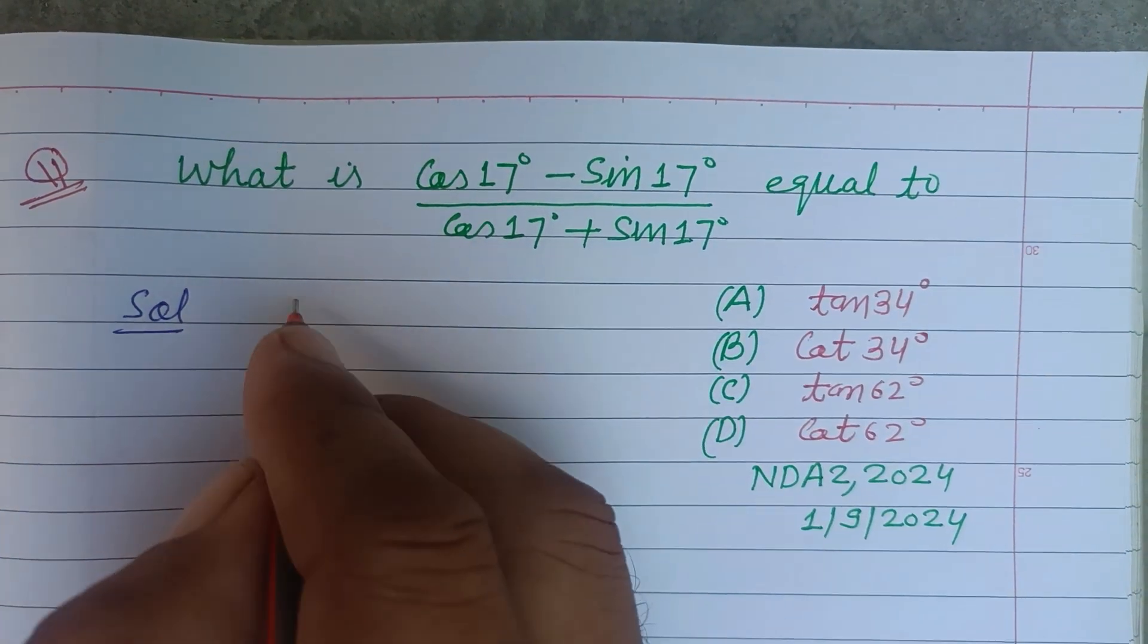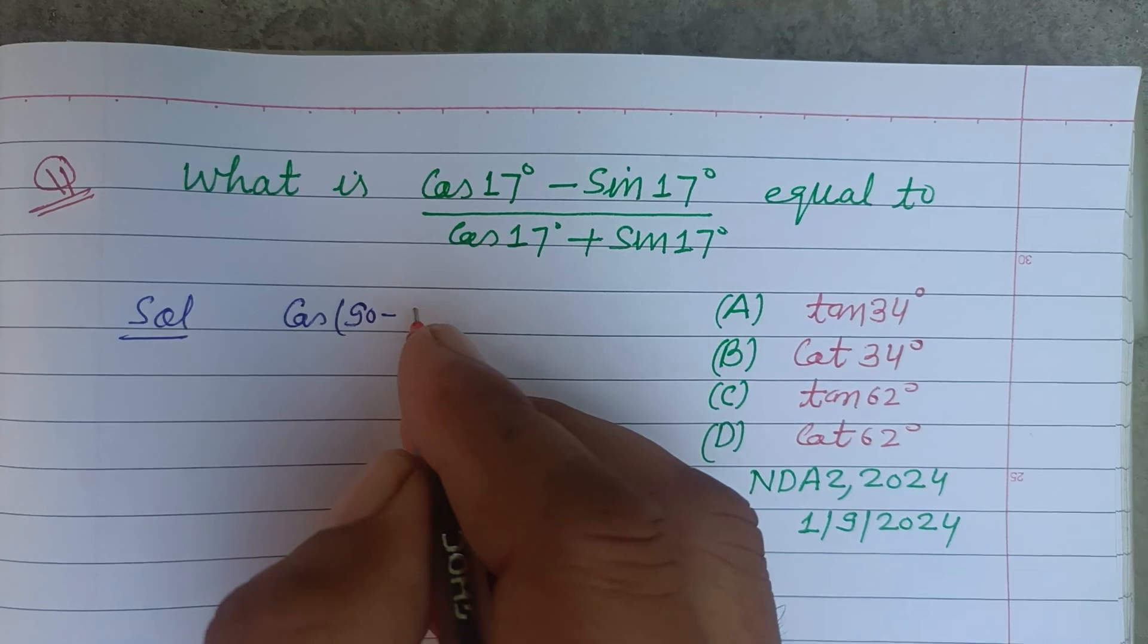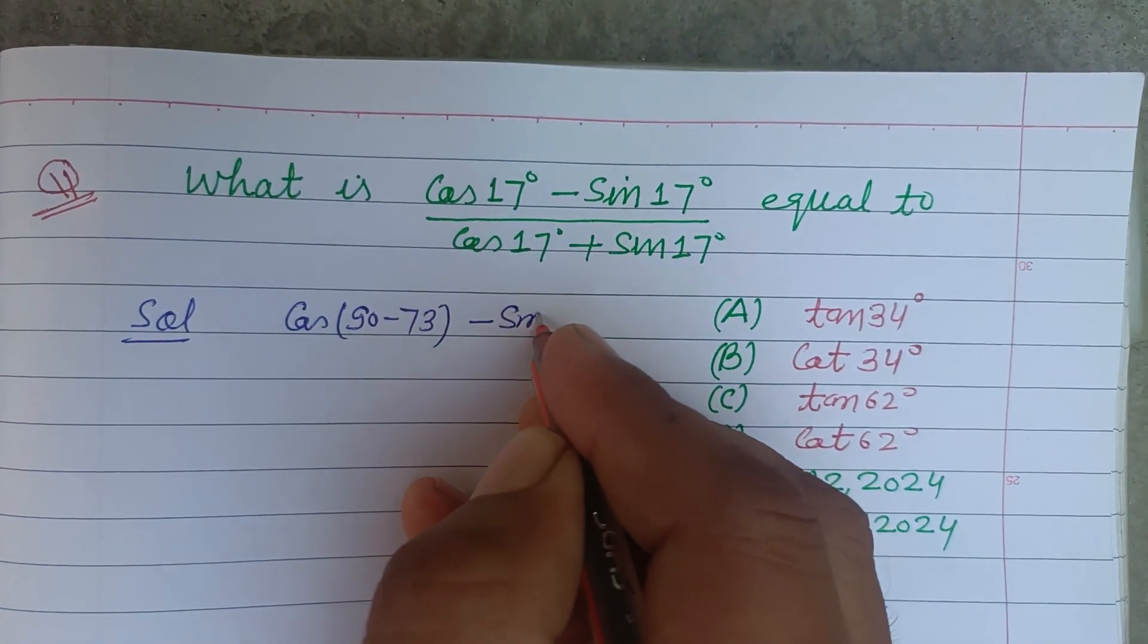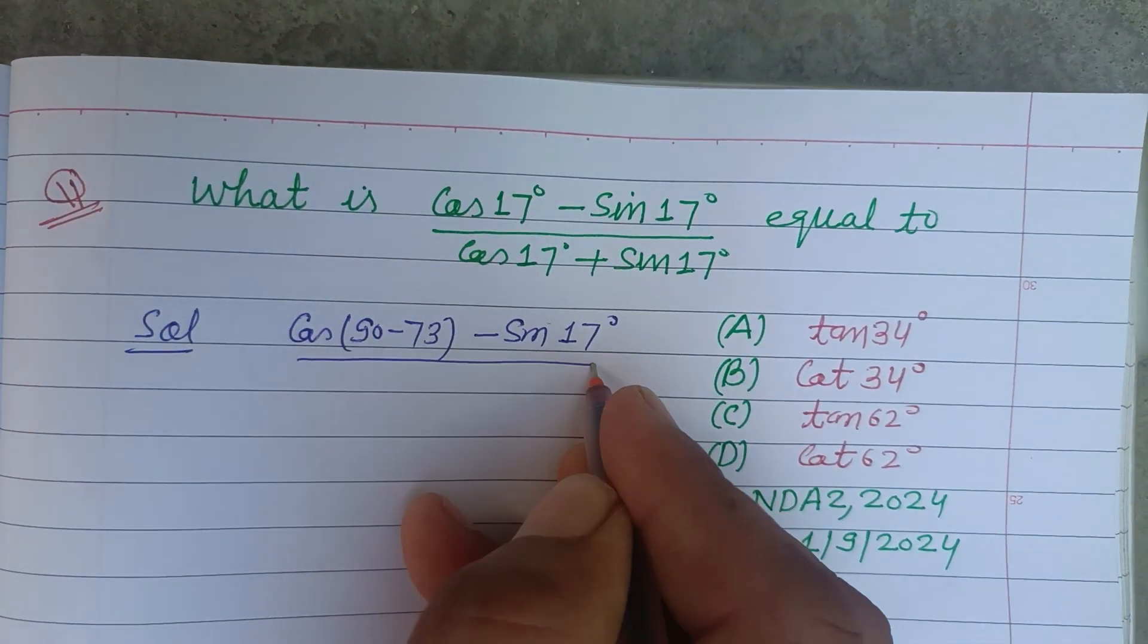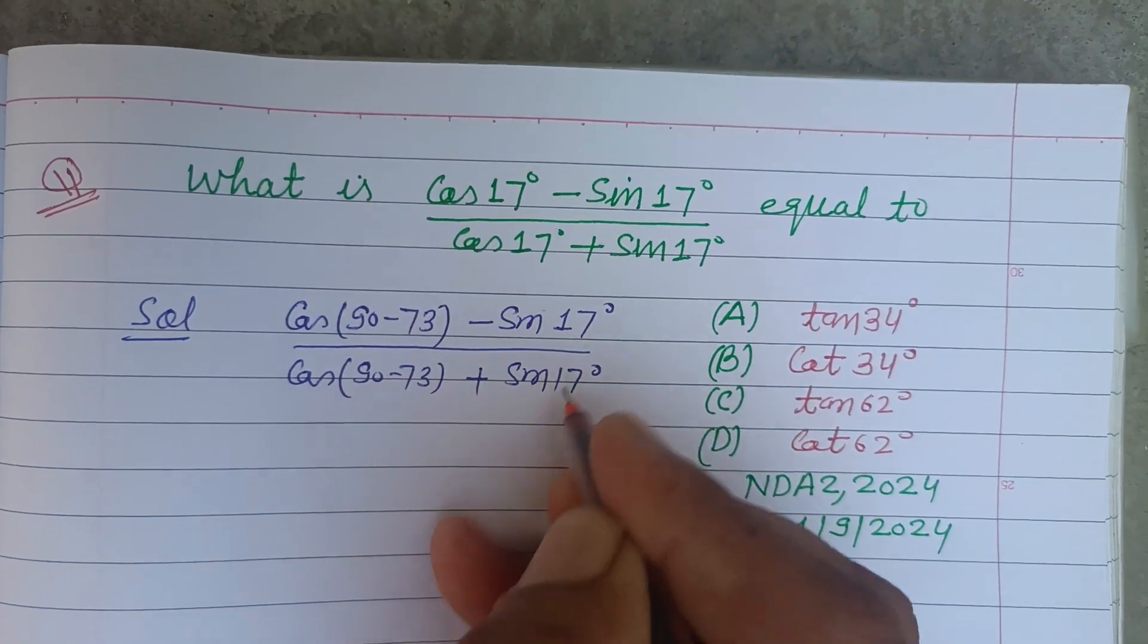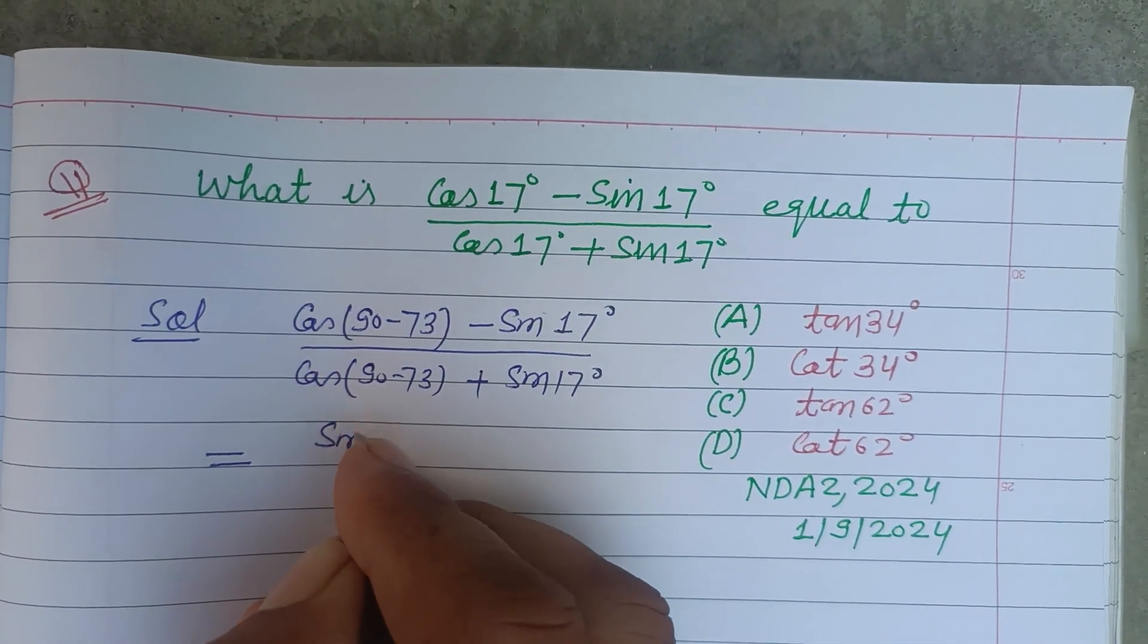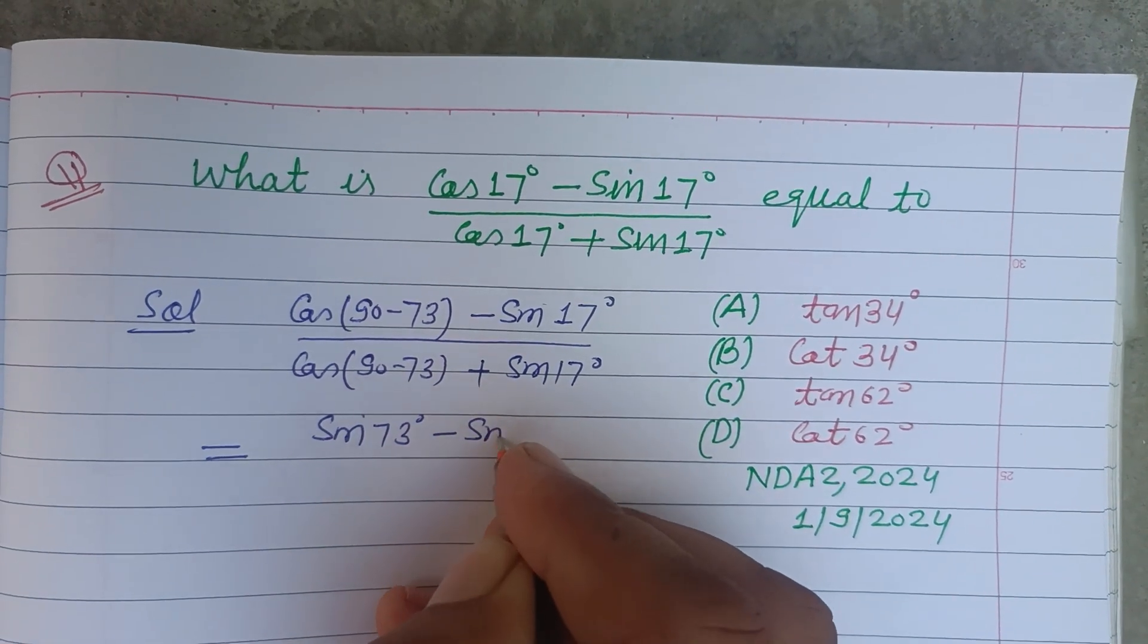here cos 17° can be written as cos(90° - 73°) and sin 17° is sin 17° upon we write cos 17° as (90° - 73°) plus sin 17°. This is cos(90° - θ), this is sin 73° minus sin 17° upon sin 73° plus sin 17°.